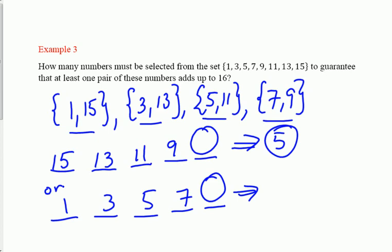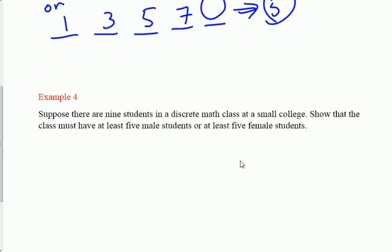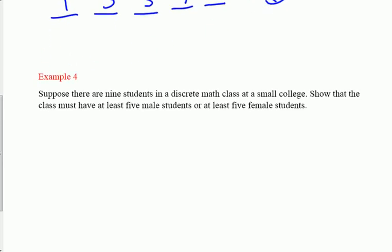Last one. This in many ways is the most interesting one. Suppose there are nine students in a discrete math class at a small college. Show that the class must have at least five male students or at least five female students. This is a great example of how you can use proof by contradiction to show that the class must have at least five male students or at least five female students. Suppose to the contrary.